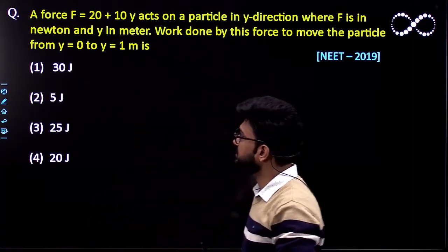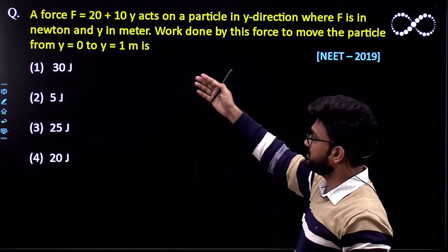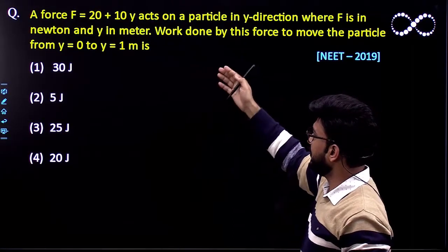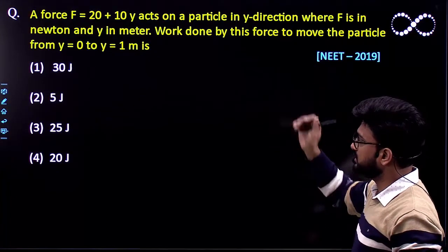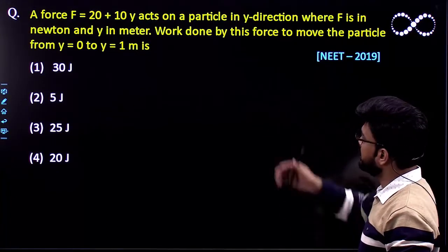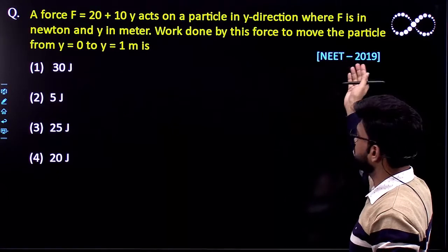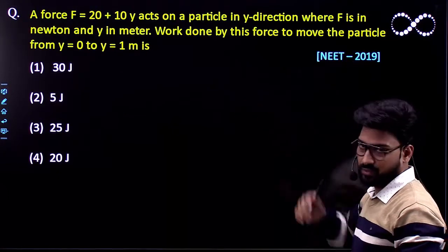So let us see this question first. Question says a force F which is given by relation 20 plus 10Y acts on the particle in Y direction where F is in Newton and Y is in meter. The work done by this force to move the particle from Y equal to 0 to 1 meter is.